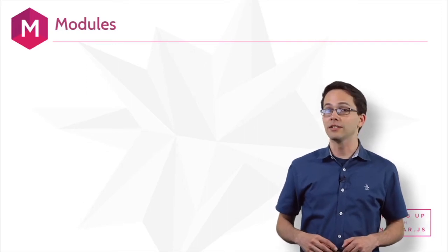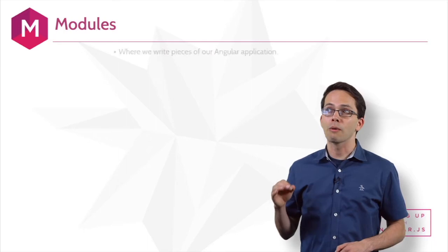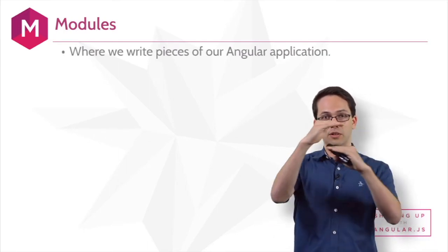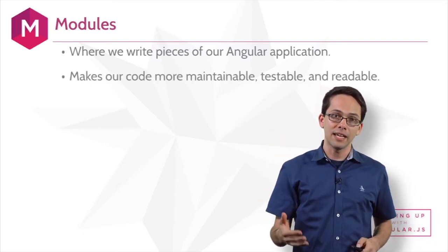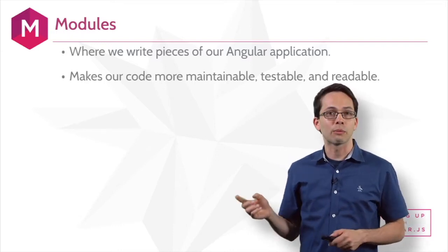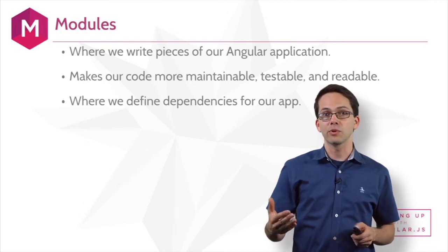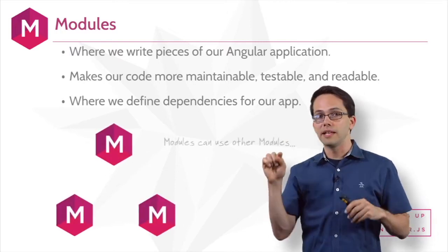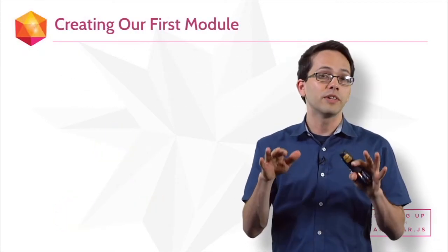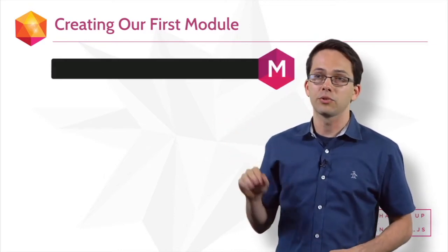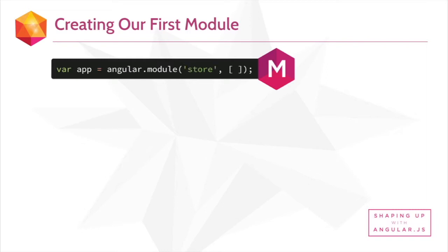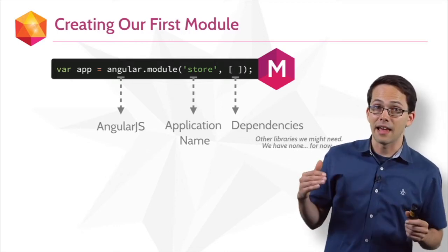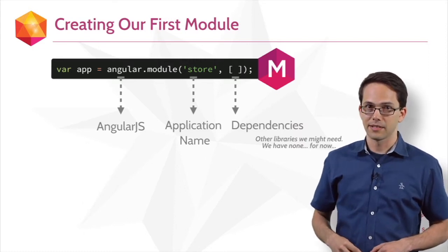The next component of our Angular application that we need to learn about is modules. Modules are where we write pieces of our Angular application — it's how we keep our code encapsulated. Because of this, it makes our code more maintainable, more readable, and more testable. Also, it's where we define all of the dependencies for our application. So the first piece of code you write in Angular is a module line: var app equals Angular.module, we give it a name — in this case, 'store' — and then in that array syntax, we define dependencies. We don't have any dependencies yet, but we still have to pass in an empty array.